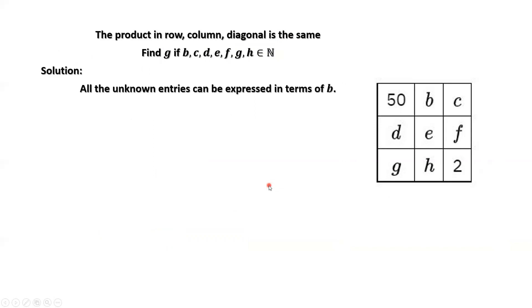This is the basic idea. We want to rewrite all unknowns in this square in terms of B. How? We use the given condition.